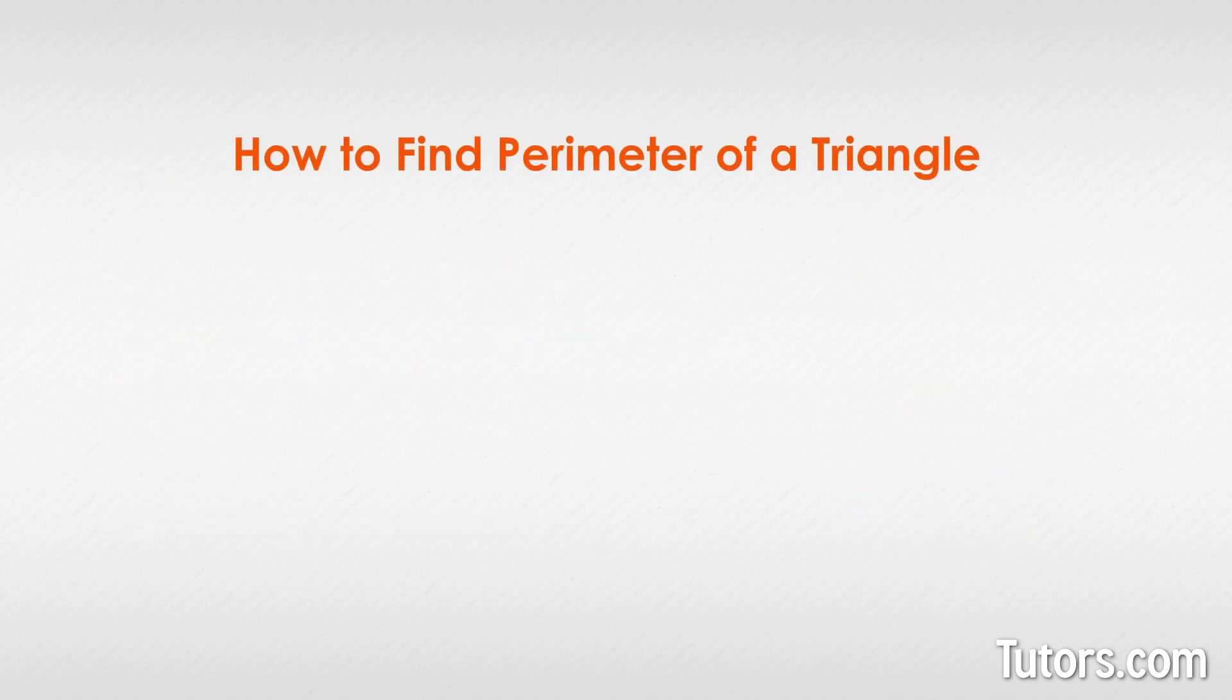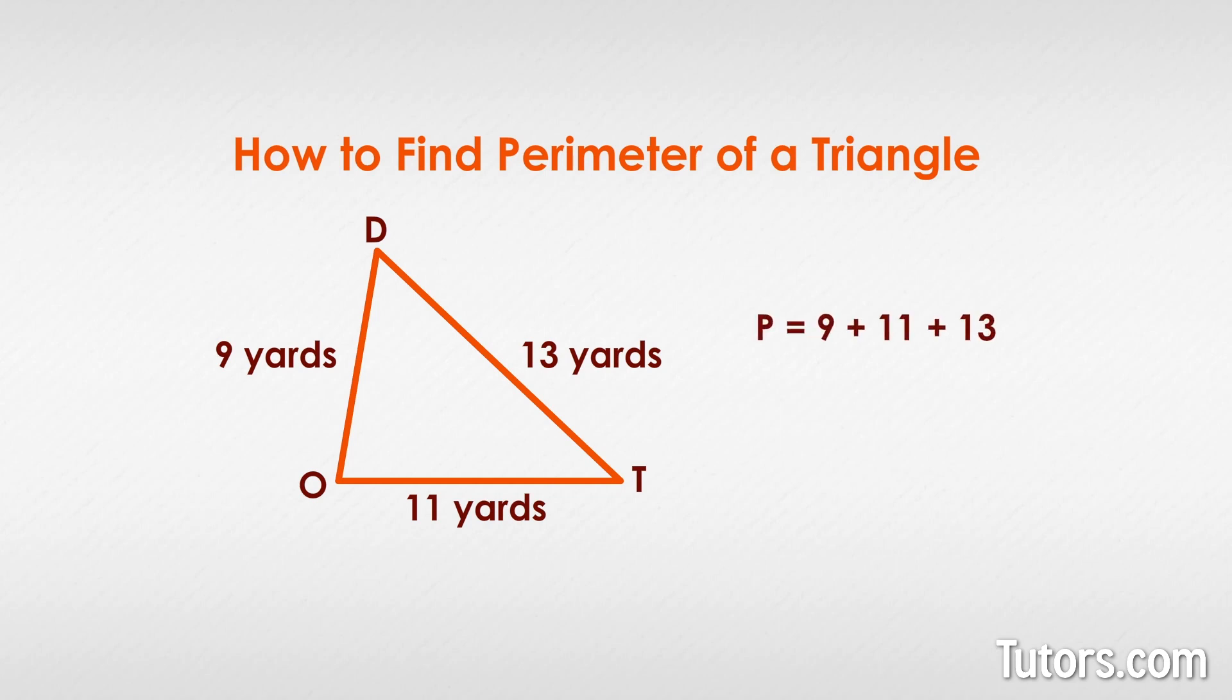How to find the perimeter of a triangle. Here is a scalene triangle, DOT, with measured sides of 9 yards, 11 yards, and 13 yards. Now add up the three lengths—9, 11, and 13—and we get P equals 33.